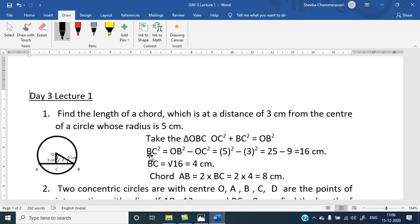OB is given and OC is given. So, we have to find out BC. So, for that, BC square equal to OB square minus OC square. That is 5 square, 5 square minus 3 square. That is 25 minus 9 is 16 cm. So, BC is square root of 16. That is 4 cm.